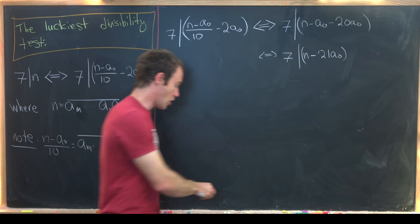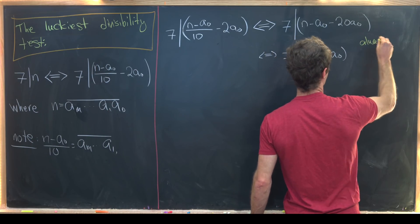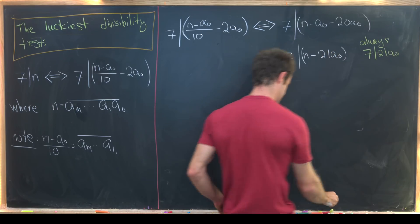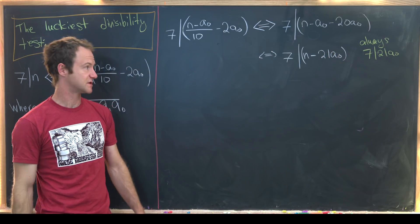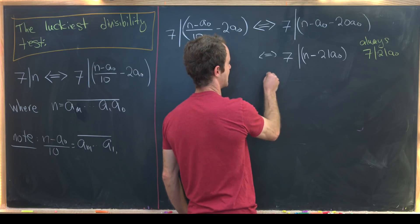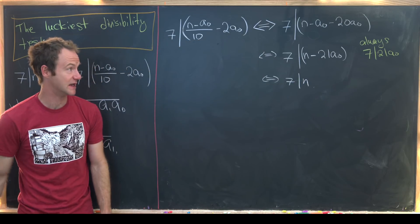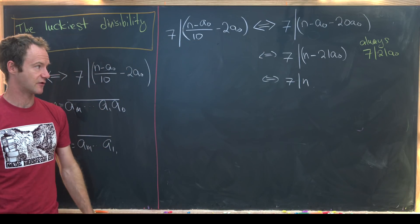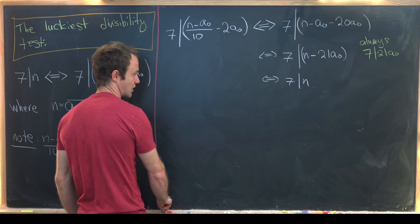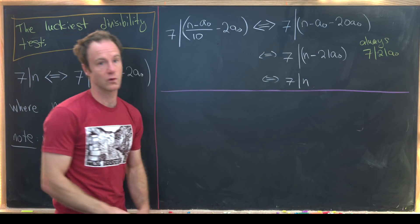But then always, so let's write that over here, we know that seven divides 21 a naught because 21 is a multiple of seven. So if seven divides 21 a naught then that means that seven must divide n because it divides that combination of n and 21 a naught. All of our steps were if and only if statements so we're actually good to go there. We have our divisibility test for seven.